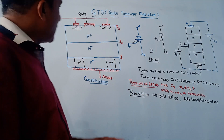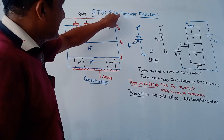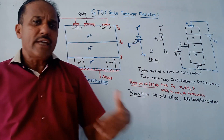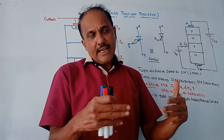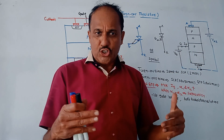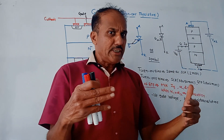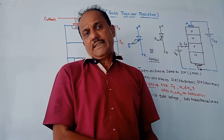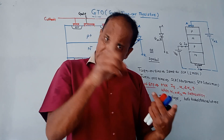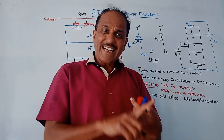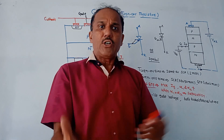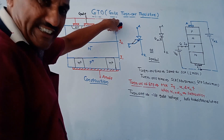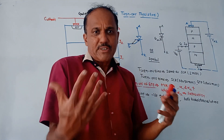Welcome back to this channel. Today's topic is GTO, that is Gate Turn Off. We have studied that SCR can be used as an ideal switch, but this application is typically limited to below one kilohertz frequency. To turn off the SCR, certain complex and expensive circuitries are required. To avoid all these drawbacks, another device is used which is called GTO.